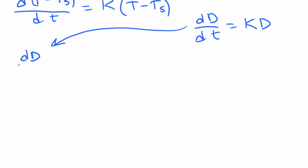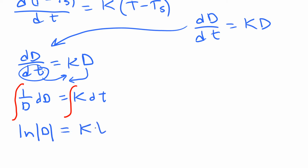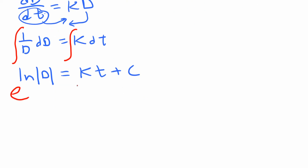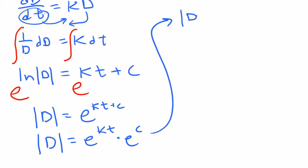You've solved these before, but we'll go through it. It's separable — move D over to get (1/D) dD on one side, and K dt on the other. Integrating both sides gives ln|D| = Kt + C. To isolate D, we anti-log both sides to get |D| = e^(Kt + C), which equals e^C times e^(Kt).